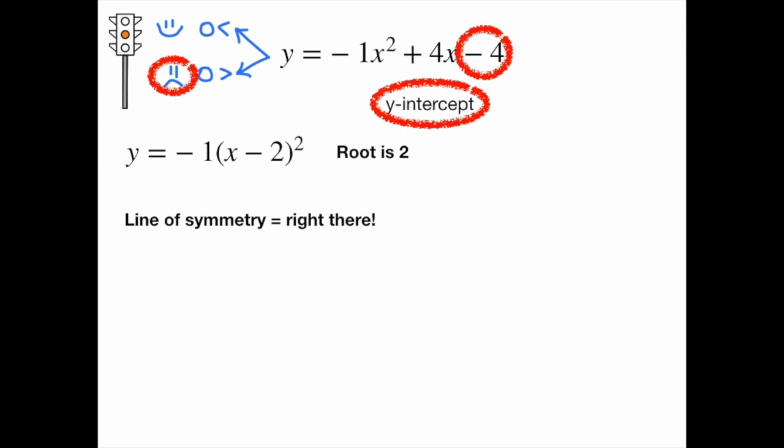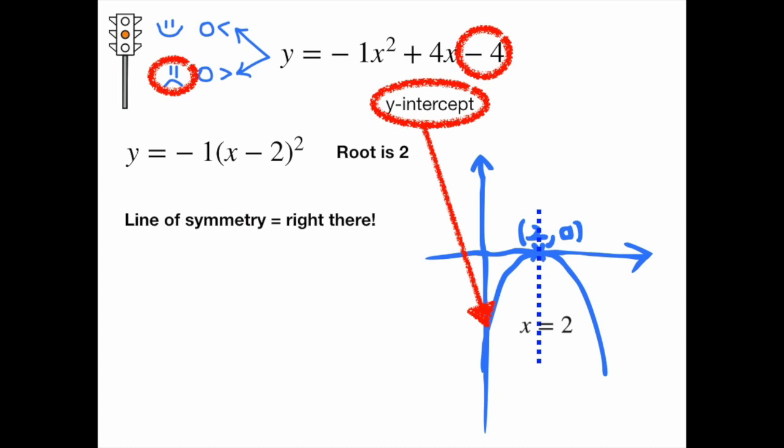Guess what? That's going to be your line of symmetry too. Since the curve is symmetrical at that point, we can state the line of symmetry as X equals 2 with a maximum Y value of 0. After labeling the Y intercept of negative 4 from the general form, that's everything you need for this curve.